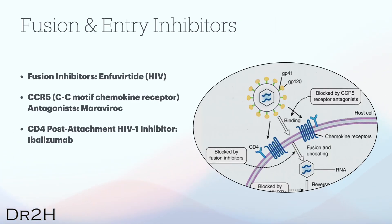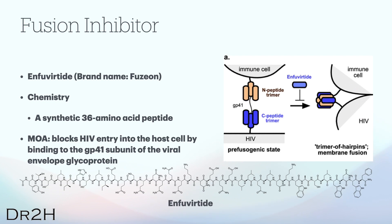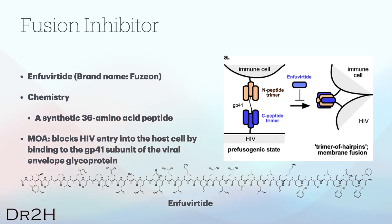We have three drugs that belong to the fusion and entry inhibitors. While they all work to prevent the virus from entering the host cell, there are some subtle differences between blocking fusion and blocking entry. The major HIV fusion inhibitor is enfuvirtide. It is a synthetic peptide that mimics a portion of the GP41 protein. By binding to GP41, enfuvirtide prevents the conformational changes necessary for viral fusion, therefore inhibiting HIV entry into host cells.